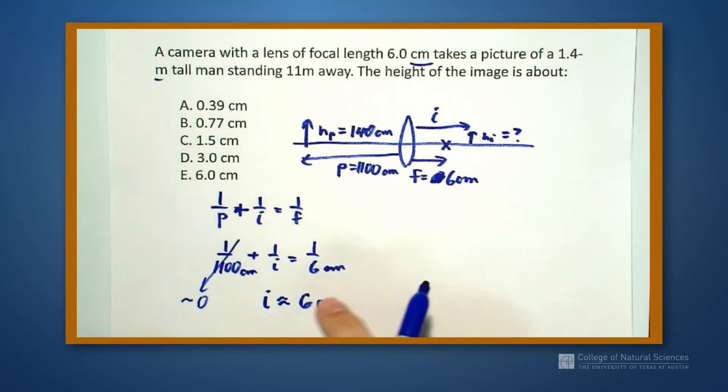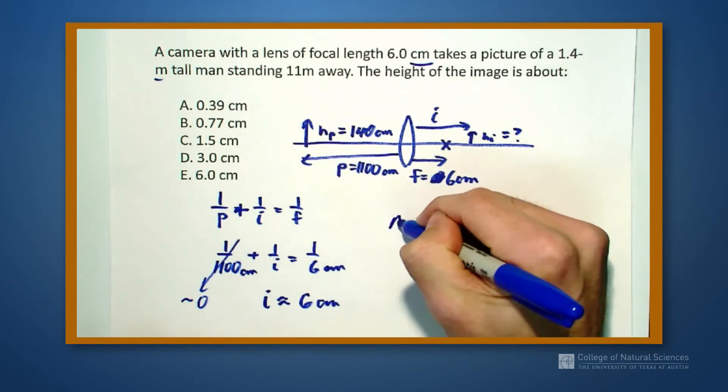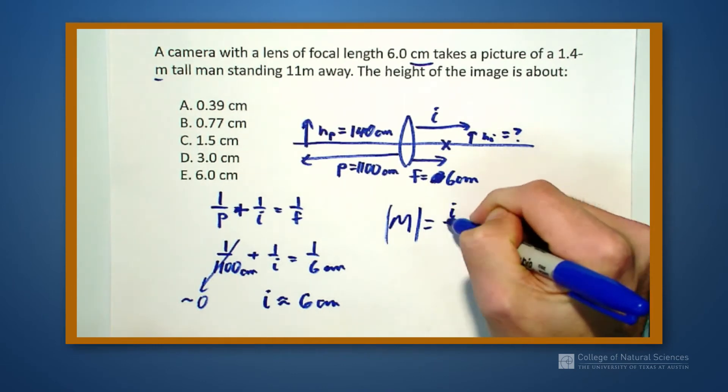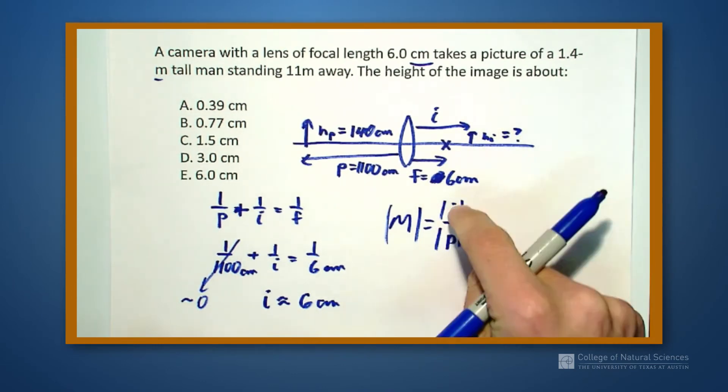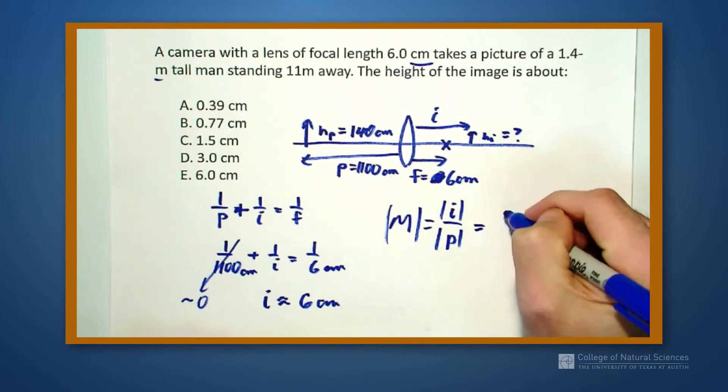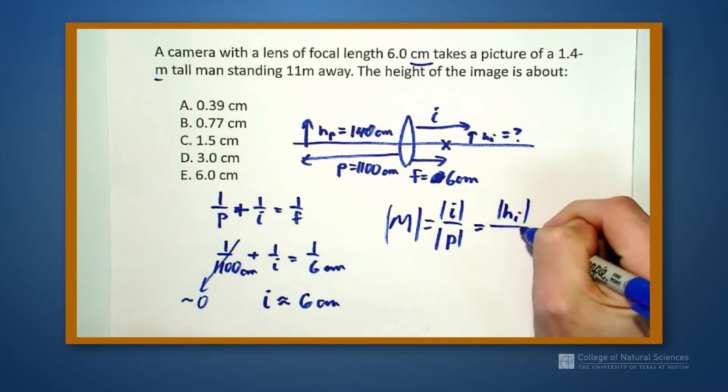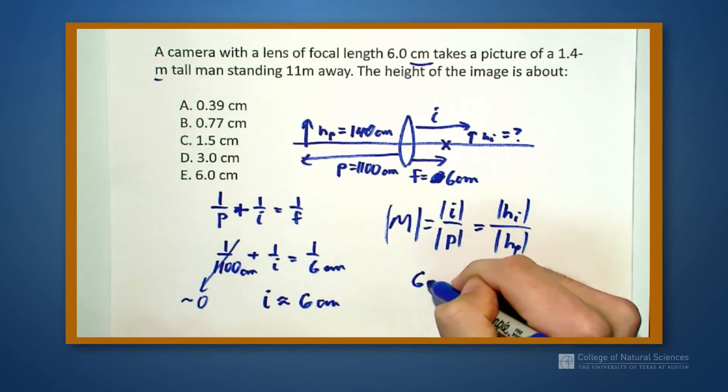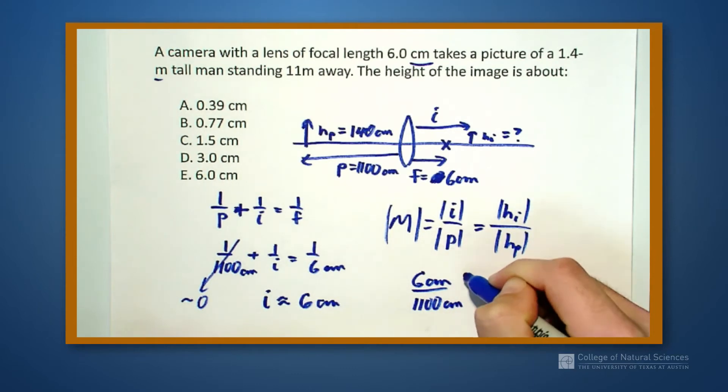But if I know that i is 6 centimeters, then I need to figure out the height. What I'm going to use is that the magnification is given by the image over the object distances, which is also equal to the image height over the object height. So my image distance is 6 centimeters, my object distance is 1100 centimeters, my image height is what I want to know, and my object height is 140 centimeters.